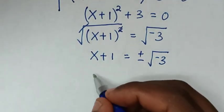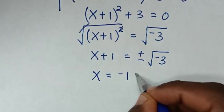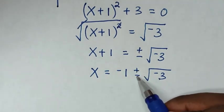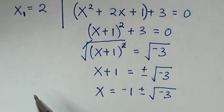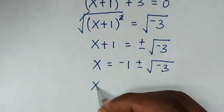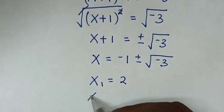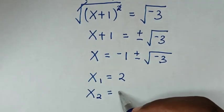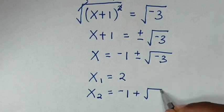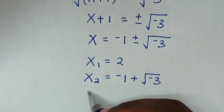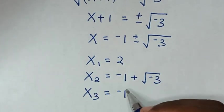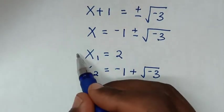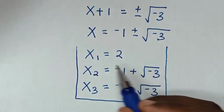Taking 1 to the right side: x = -1 ± √(-3). We have two solutions because of the plus or minus. So all three values of x are: x = 2, x = -1 + √(-3), and x = -1 - √(-3). These are all the values of x in this problem.